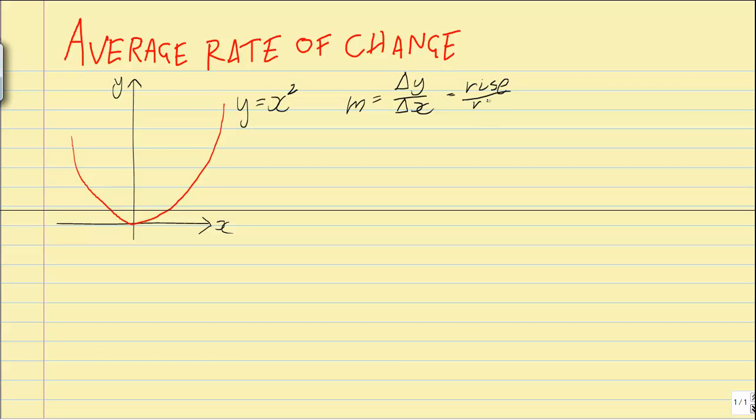This is just our formula: rise over run, or y₂ minus y₁ over x₂ minus x₁.